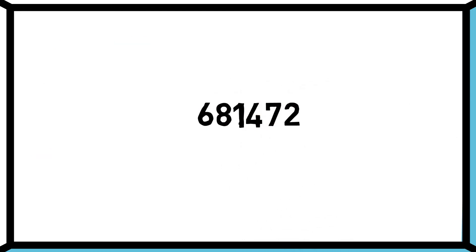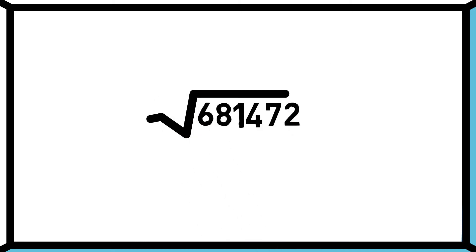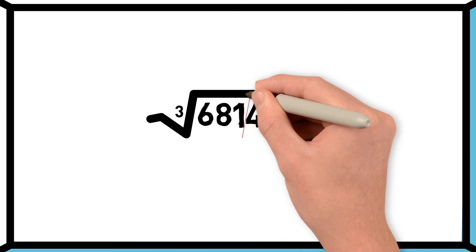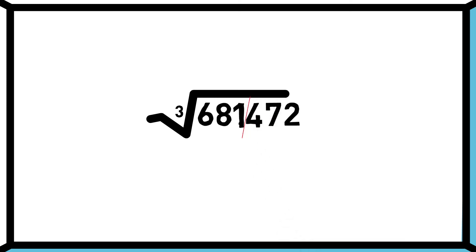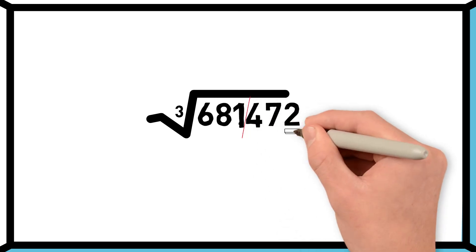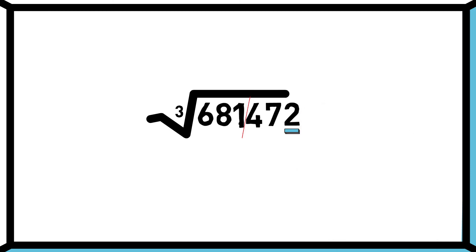Let's take one more example to find the cube root of 681,472. Always separate last 3 digits from the starting digits. Here, the last digit of our question is 2.